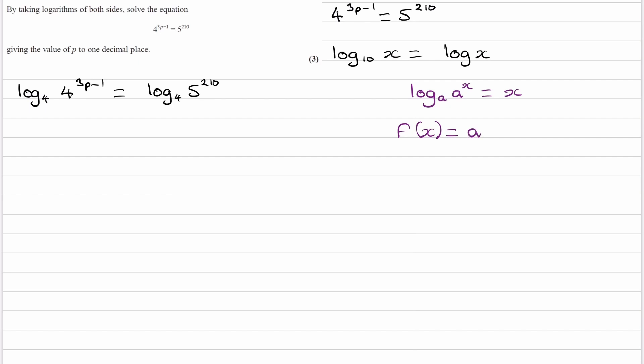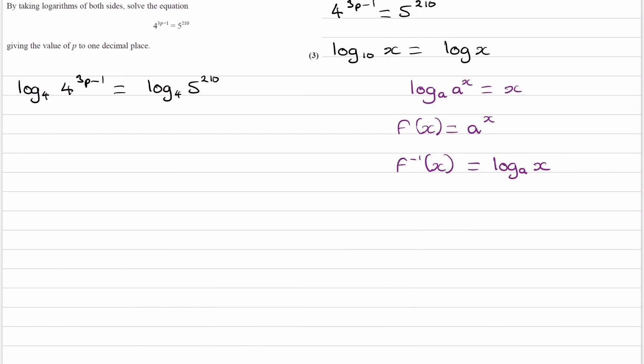And the reason for that is because they're inverse operations. So if you were to have f(x) being a to the power of x, so that does something to x. It changes what x is into some other number. And the inverse of this, so f inverse of x, would be log to the base a of x. So what that basically means is, whenever you have x as a power of a, so a to the power of x, whatever that does to x, this does the opposite.